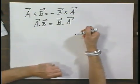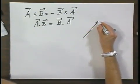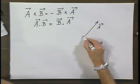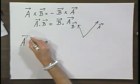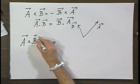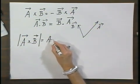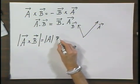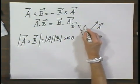Now we know the direction of the cross product. Now comes the question: what is the magnitude of the cross product? If we have vector A and vector B, then the magnitude of A cross B equals the magnitude of vector A times the magnitude of vector B times the sine of the angle theta.